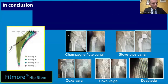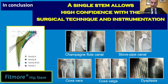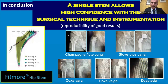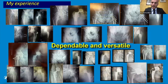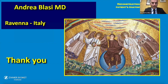In conclusion, Fit More AM is very effective in solving various anatomical situations. In particular, using a single stem allows high confidence with the surgical technique and instrumentation, which is very important for reproducibility and good results. In my experience, I use the Fit More stem in over 99% of my primary hip arthroplasties. I believe it is a great stem — dependable and versatile. My name is Andrea Bellasi; thank you for your time.